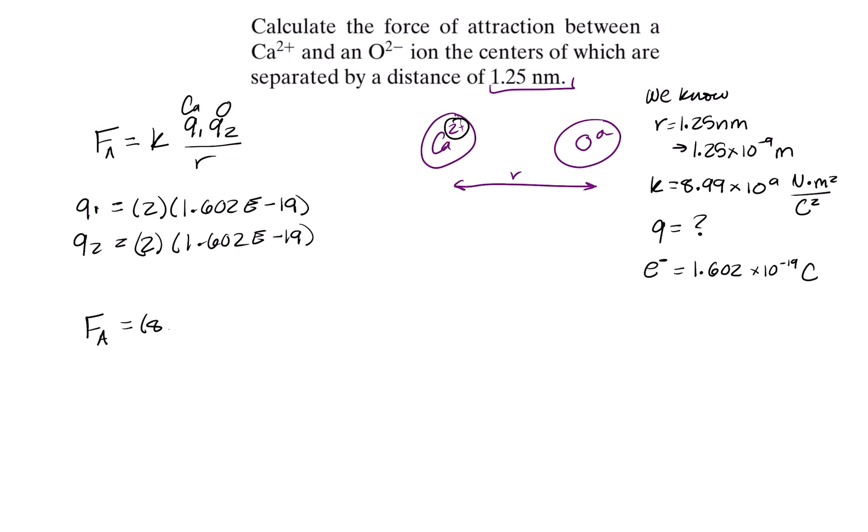So k, we've got 8.99 times 10 to the 9th, and then we can go ahead and add in our 2 times 1.602, and I'm just going to go ahead and square that, because that is the same for both q1 and q2.